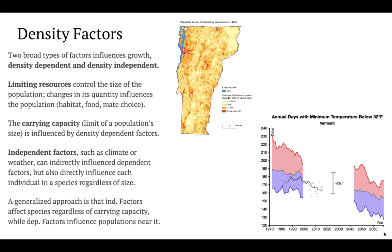There are two big types of factors influencing population growth and success: density-dependent and density-independent. Density-dependent factors involve living resources — things like habitat availability, food, or mate choice — that really control population size and future growth. In Vermont, as urbanization has reduced land corridors in the Chittenden, Addison, and Bennington areas, moose populations have had less and less available habitat, which has been a major influential factor in the declining number of moose in Vermont.